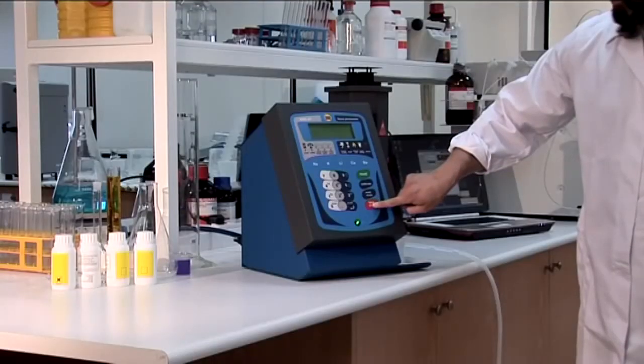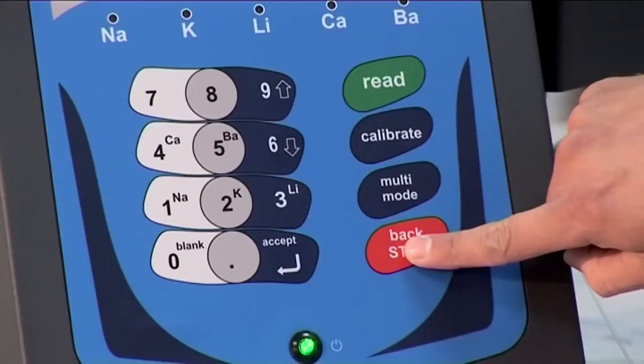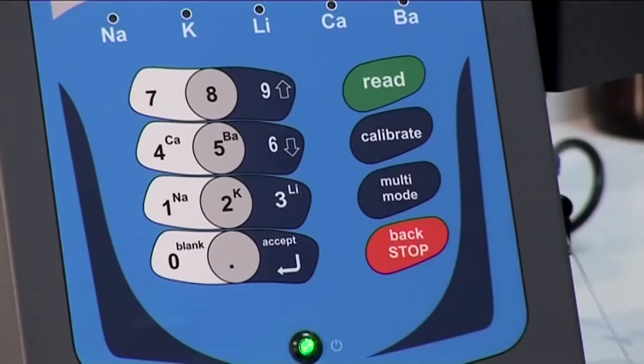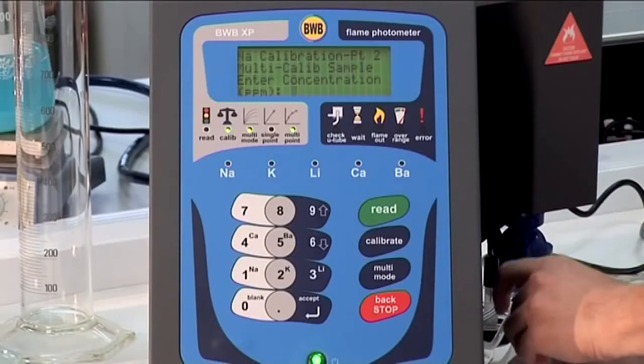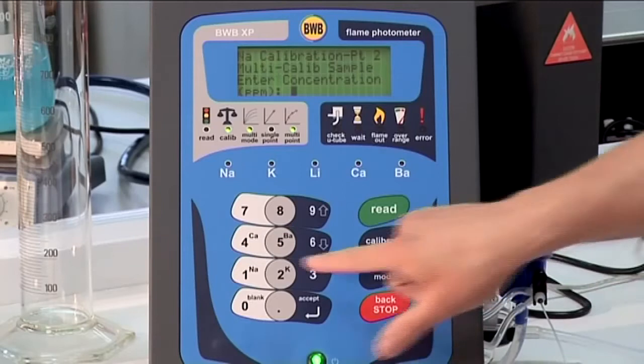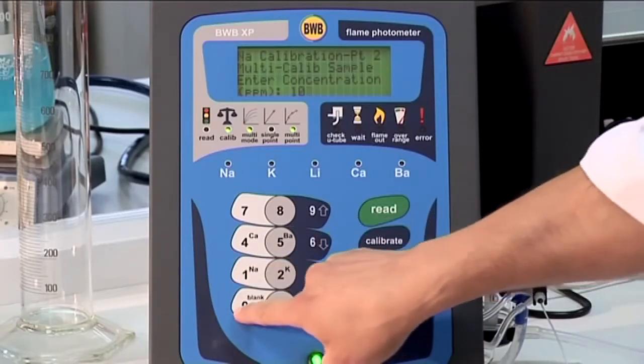There are a variety of sub-menus, and at any time, pressing the back button will revert to the previous menu item. At various times, the operator will be prompted by the BWB XP to carry out an operation.